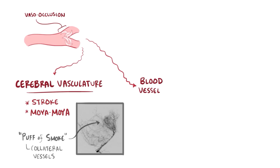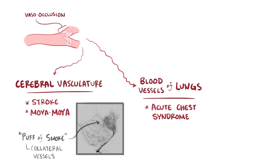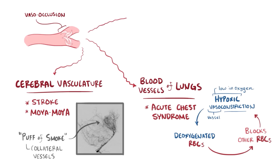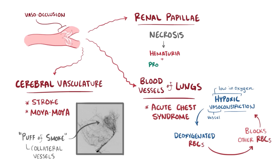Sickled cells can also get stuck in the blood vessels of the lungs, leading to acute chest syndrome. This is particularly dangerous because it sets up a vicious cycle of congested, deoxygenated red blood cells preventing other red blood cells from getting oxygen, and this is made worse by the lungs' natural tendency for hypoxic vasoconstriction, which is blood vessel constriction in areas of the lungs that are low in oxygen. In addition, clogging in the renal papillae can cause necrosis, which can manifest as hematuria and proteinuria — blood and protein spilling out into the urine.